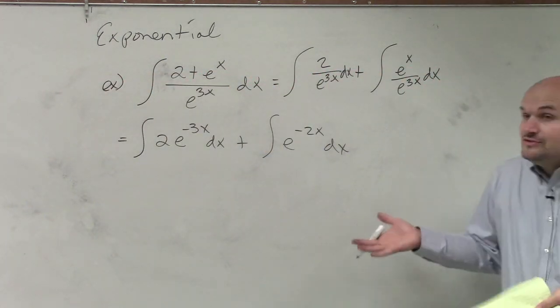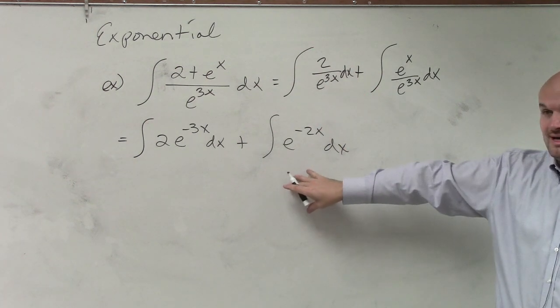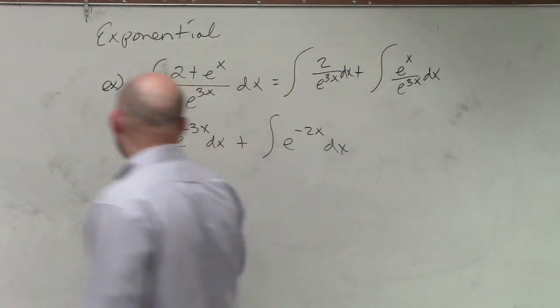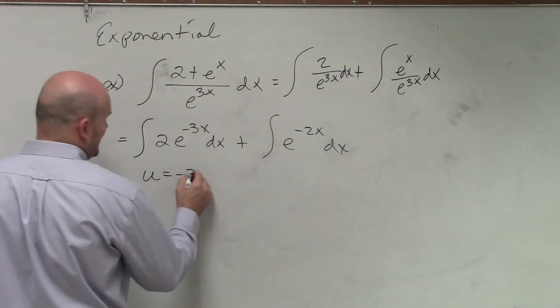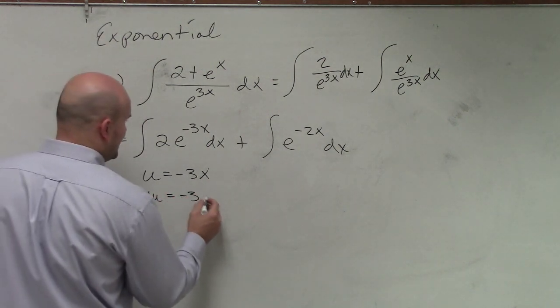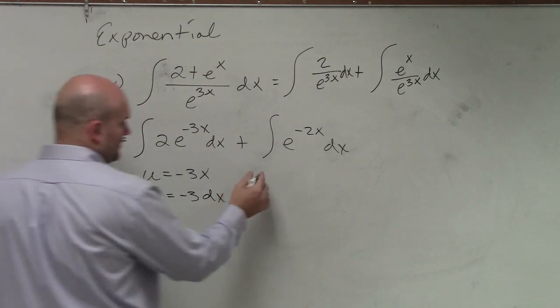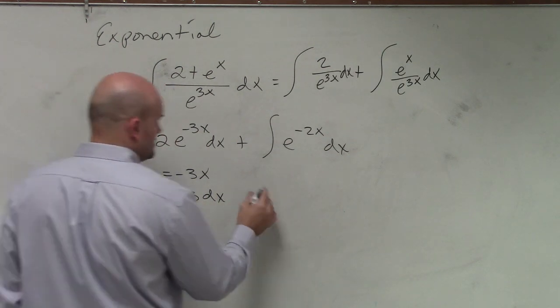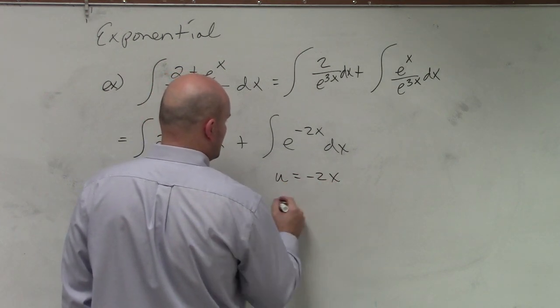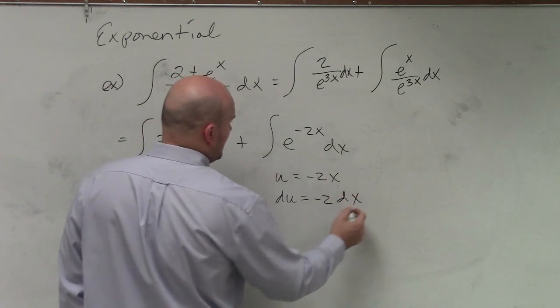So now I don't have to use u-substitution initially, but now if I'm going to integrate these, you do realize that I do need to go through u-substitution. So here, I could say my u is equal to negative 3x. Du is going to equal negative 3 dx. Over here, I have my u is equal to negative 2x. Du is going to be negative 2 dx.